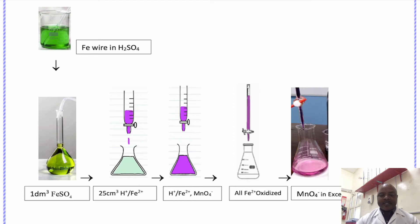The number of moles of iron(II) ions present in the beaker is the same as in this 1 dm³ volumetric flask. All the solution of the sulfuric acid containing the iron wire, the iron(II) ions, and the impurities were all transferred into a volumetric flask and made up to 1 dm³. Then 25 cm³ of this solution was measured.